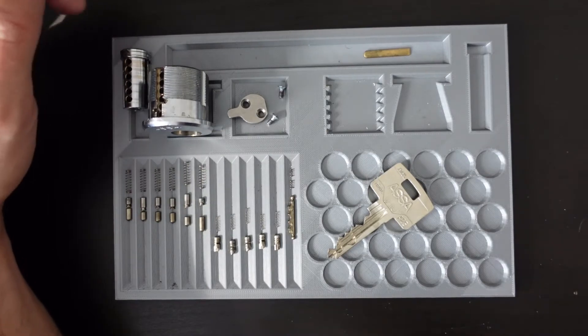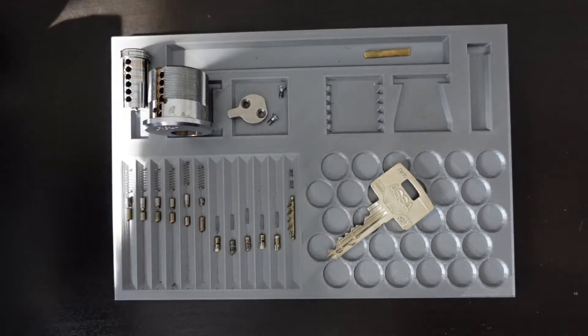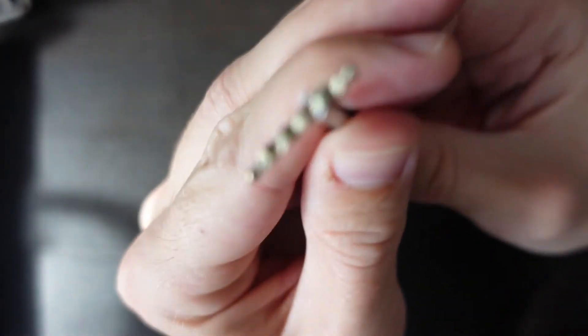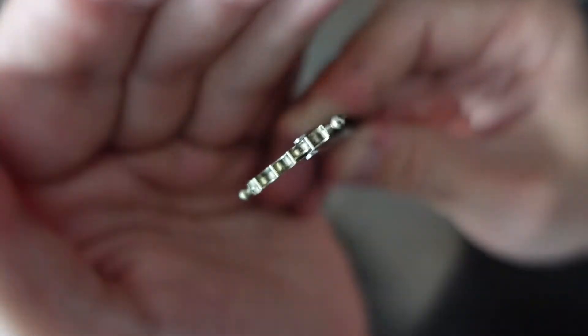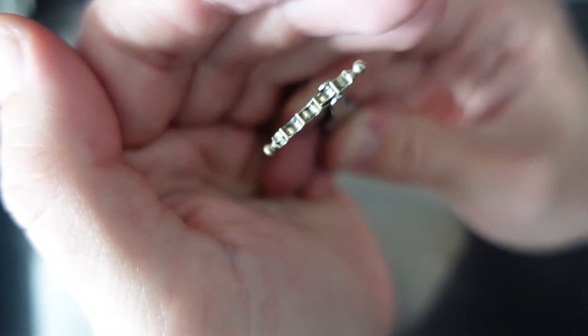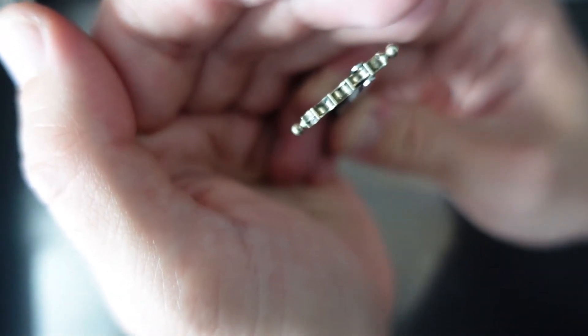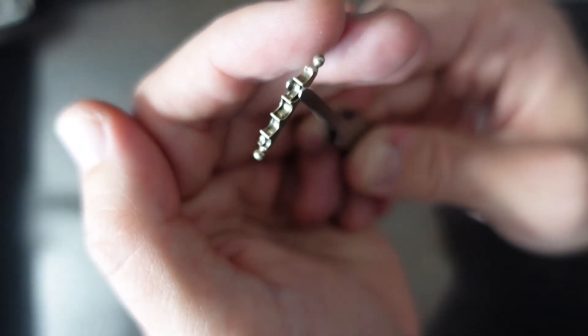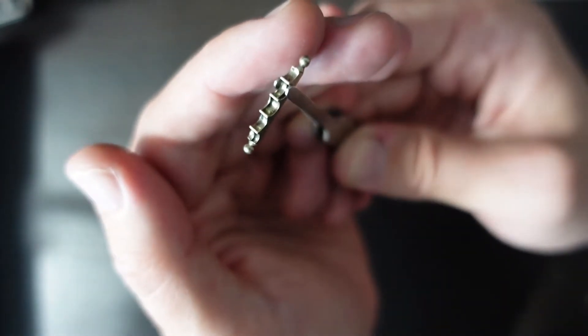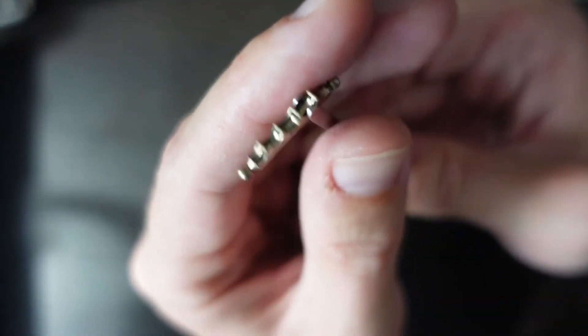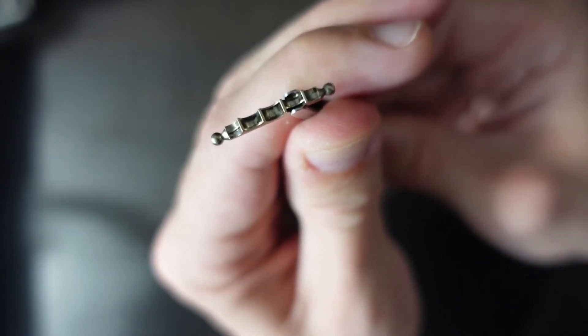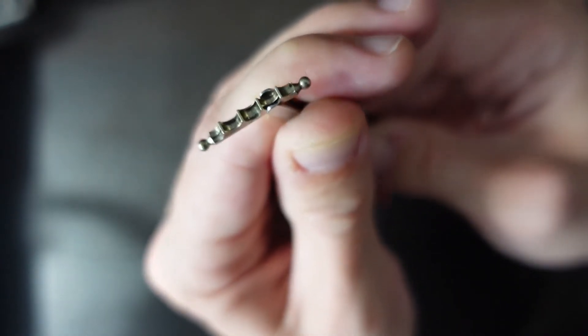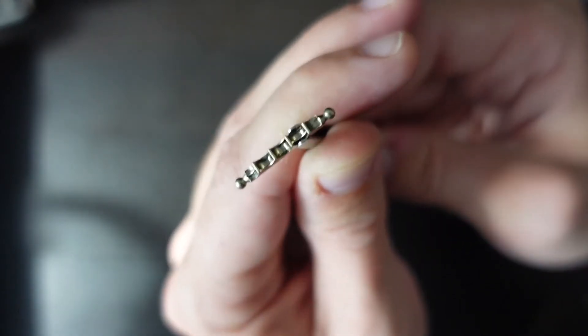There's one more thing I forgot to mention or to show you, and that's the sidebar. As you can see, the sidebar has its fences in different heights so that the side pins can look the same. All of the true gates of the side pins are in the same position, and this sidebar has the code for it in itself. Let's get to picking.